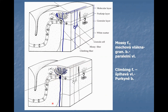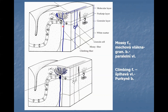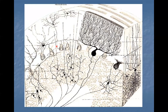Purkinje cells are influenced by two types of fibers. One type is named mossy fibers, which terminate on granular cells. This is a typical example of a mossy fiber making contacts with granular cells. The second type entering the cerebellar cortex are climbing fibers, which climb along the dendrites of Purkinje cells and branch extensively along the entire dendritic arborization.